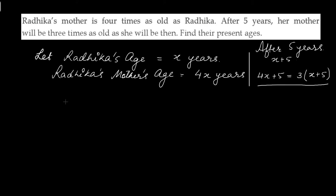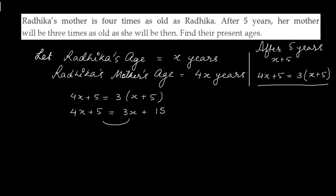So, let us solve this equation to get the value of X, that is Radhika's age. So, 4X plus 5 is equal to 3 times X plus 5. Let us first open the brackets by distributive property. Therefore, 4X plus 5 is equal to 3X plus 15. Now, we will take 3X to LHS and 5 to RHS. So, we will get 4X minus 3X equal to 15 minus 5.